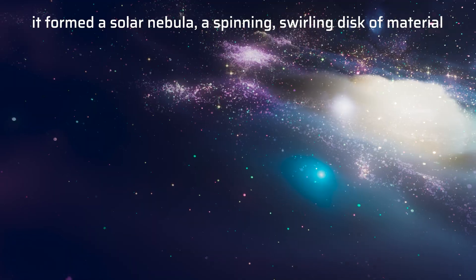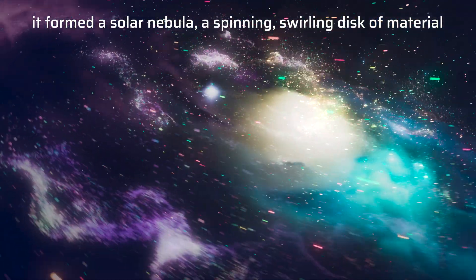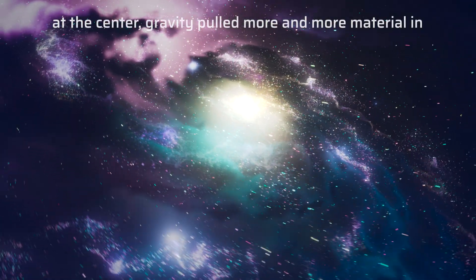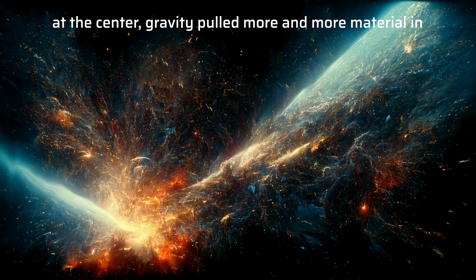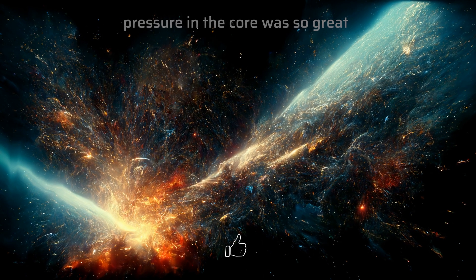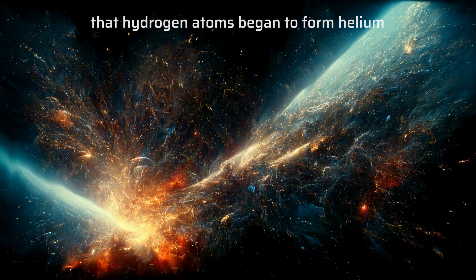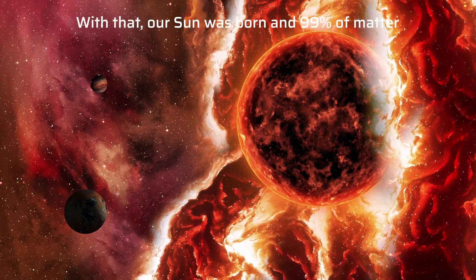It formed a solar nebula, a spinning, swirling disk of material. At the center, gravity pulled more and more material in, and pressure in the core was so great that hydrogen atoms began to form helium. With that, our sun was born.